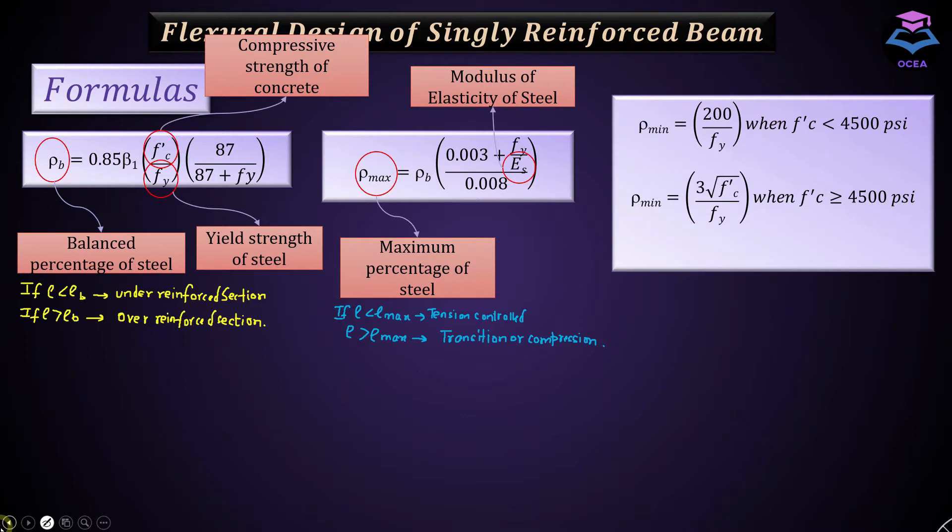To evaluate the minimum percentage of steel, two equations are available. First, when FC' is less than 4500 psi, rho minimum is equal to 200 over FY. Second, when FC' is greater than or equal to 4500 psi, rho minimum is equal to 3√FC' divided by FY.